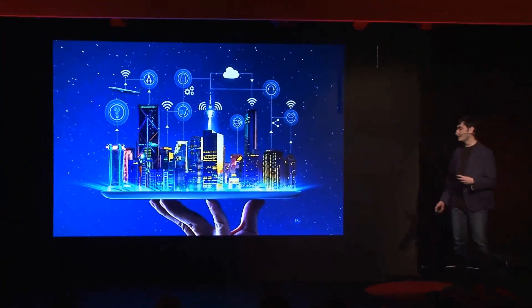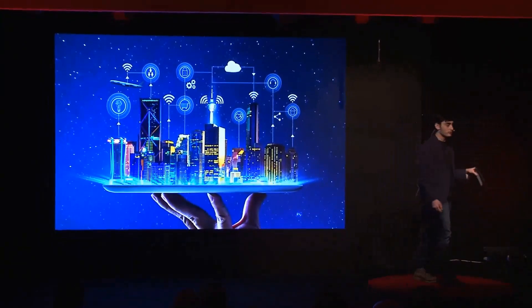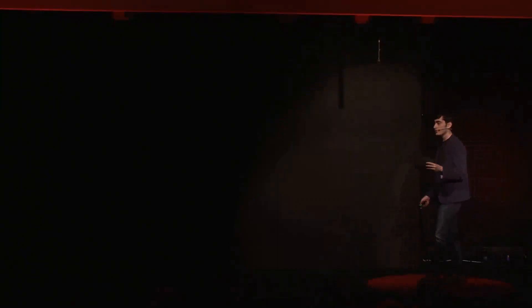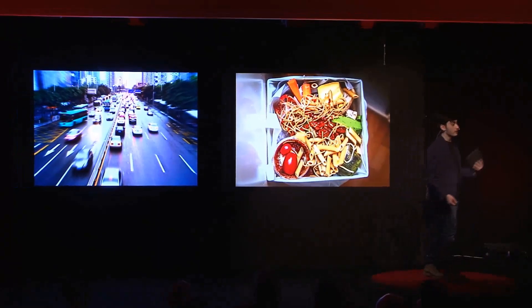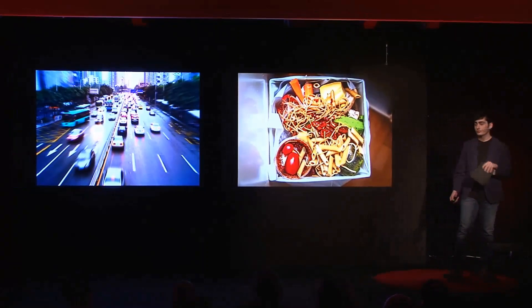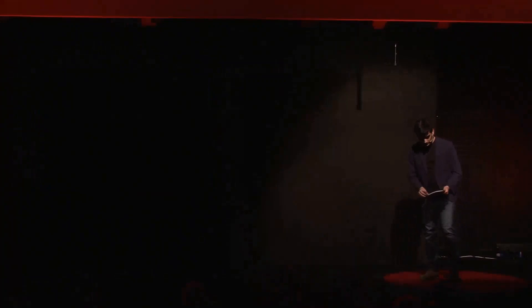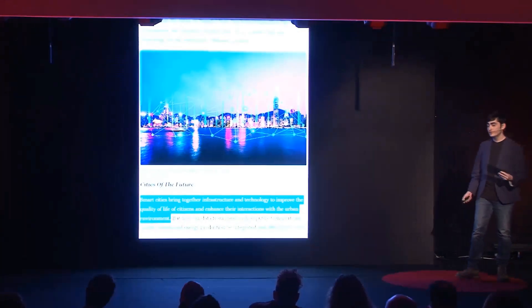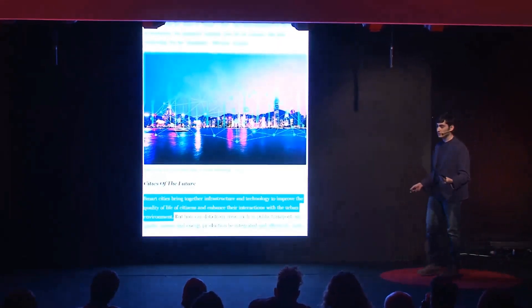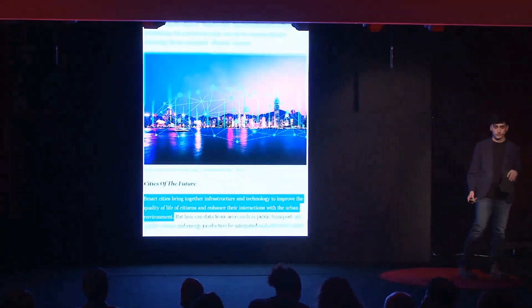The term smart city is used to define the city's ability to respond as efficiently as possible to the needs of citizens. Since population growth is so high, problems such as traffic, security concerns, and lack of nutrition products have increased the necessity of controlling daily life to make citizens' lives easier. As said in the Forbes article, smart cities bring together infrastructure and technology to improve the quality of life of citizens and enhance their interactions with the urban environment.